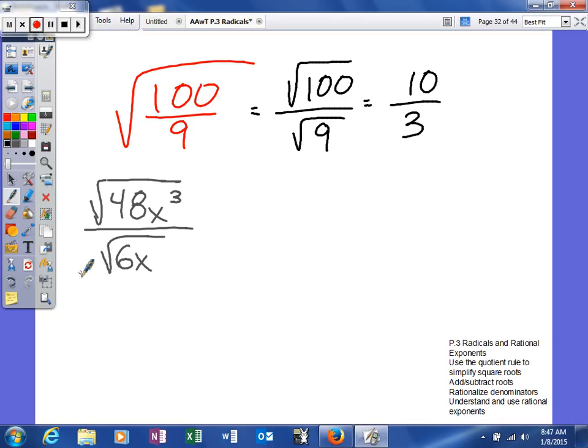Looking at the next one, this is kind of still the quotient rule, but we're kind of using it in the opposite direction. So we have the square root of 48x to the third over the square root of 6x. So what we can do is we can actually rewrite this as the square root of 48x to the third divided by 6x.